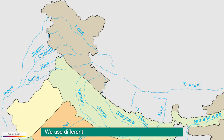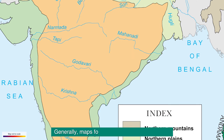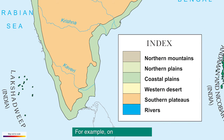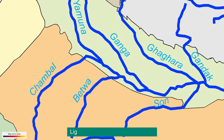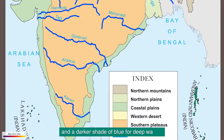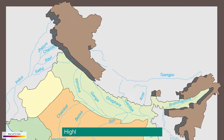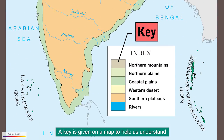Colors: we use different colors to show various things on a map. Generally, maps follow a common color scheme. For example, on a physical map, water bodies are shown in shades of blue — light blue for shallow waters and a darker shade of blue for deep waters. Plains or lowlands are shown in shades of green, and highlands are shown in shades of brown. A key is given on a map to help us understand the color scheme and the symbols used.